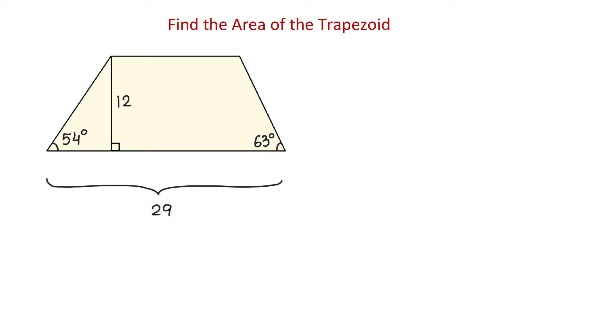A trapezoid is a quadrilateral with two parallel sides. In the trapezoid to the right, one of these sides is side A, and the other one is side B. Side A is the lower base of the trapezoid, and side B is the upper base. Then, if we know the lower base A, the upper base B, and the height H, we can find the area using this formula.